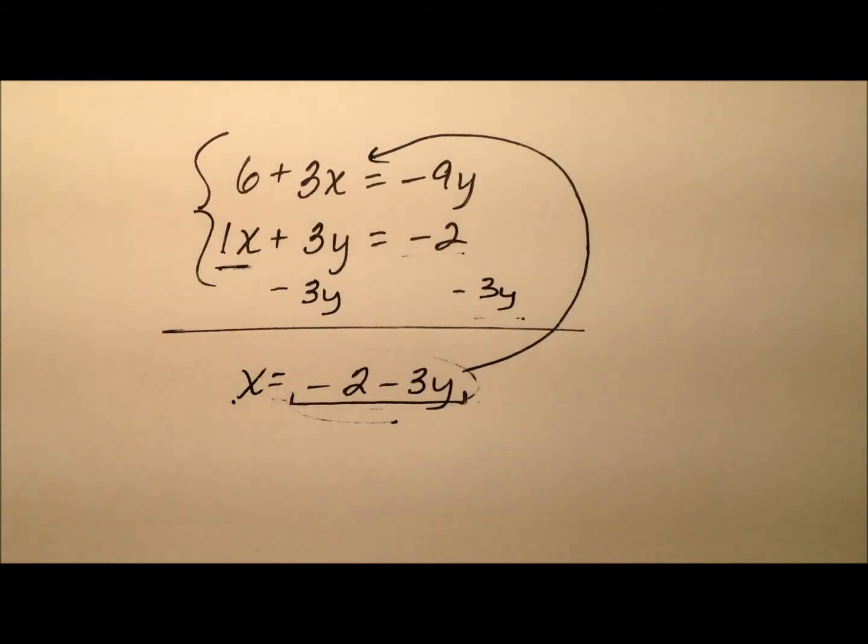So I'm going to substitute this expression in for x but in the other equation. And remember that's how we combine the two equations together. So I'm going to have 6 plus 3x. Well, the value of x that we're going to use is negative 2 minus 3y. And make sure that when you're substituting you always use parentheses. And that equals negative 9y.